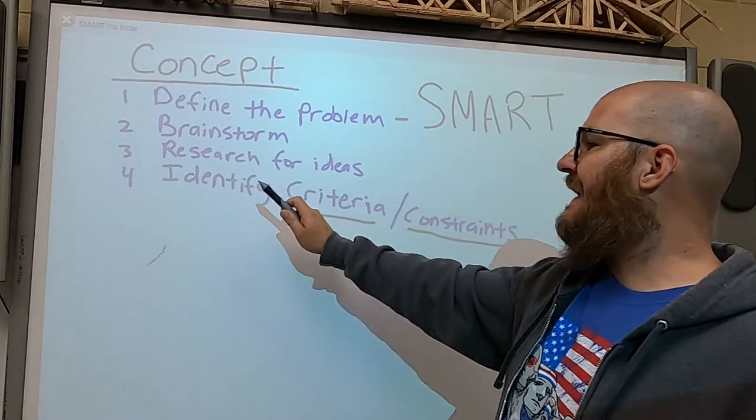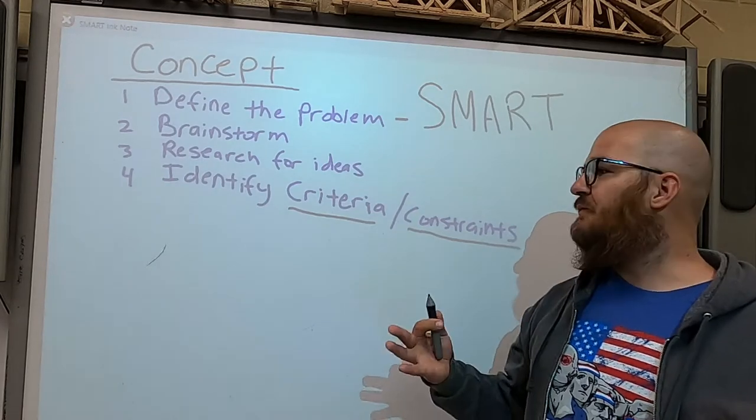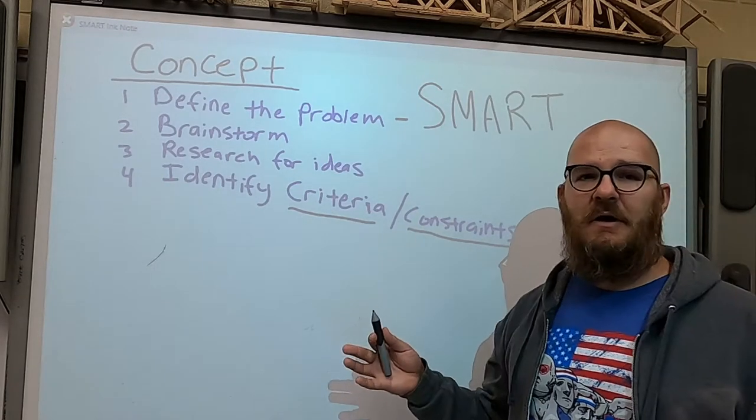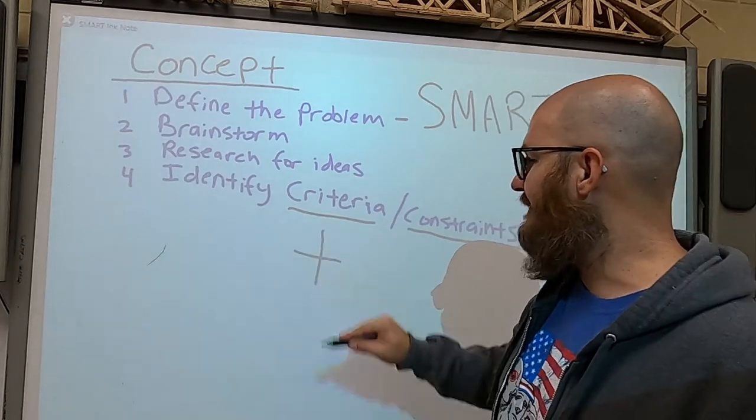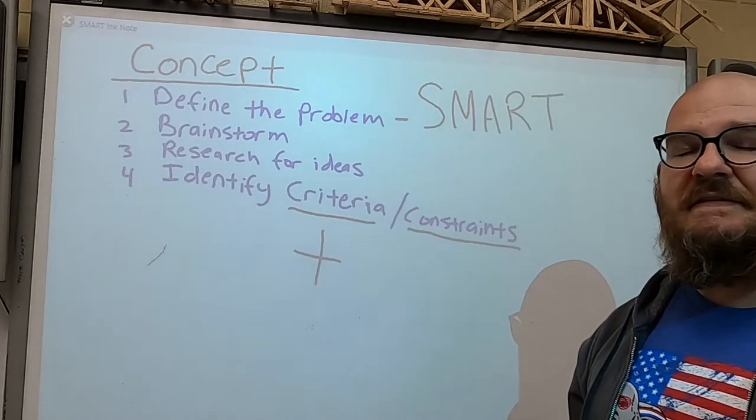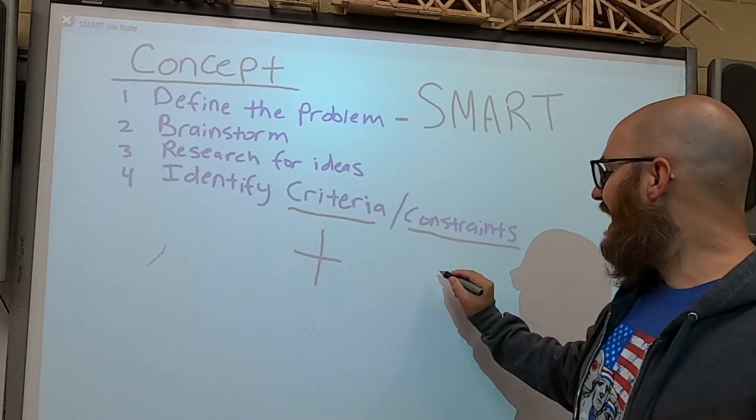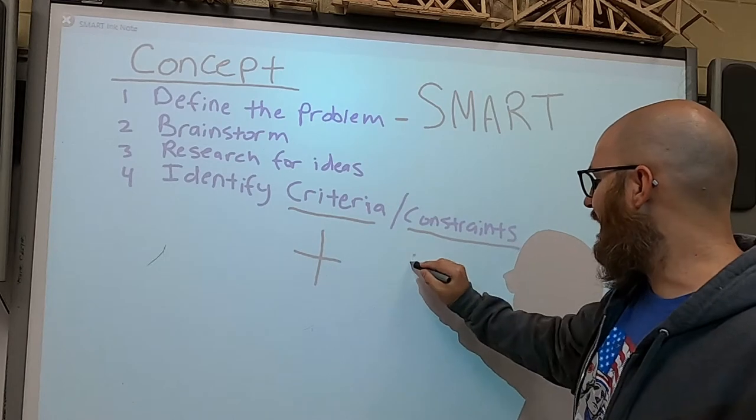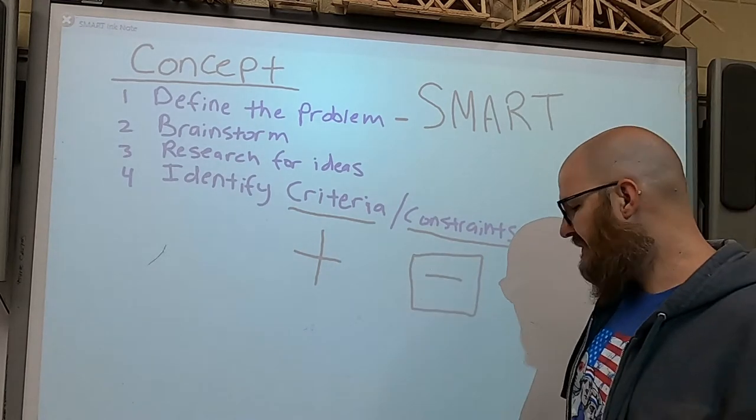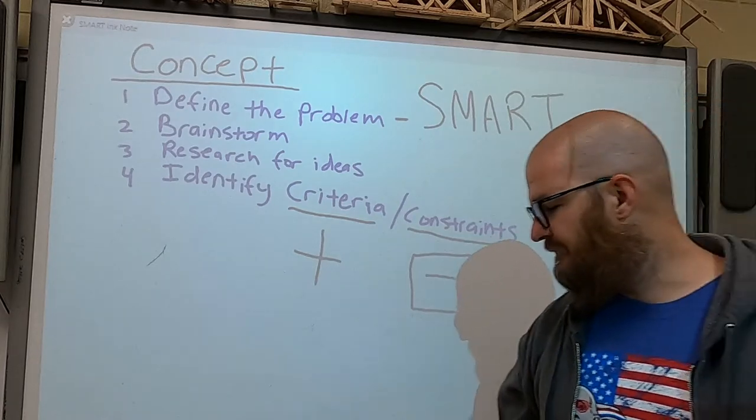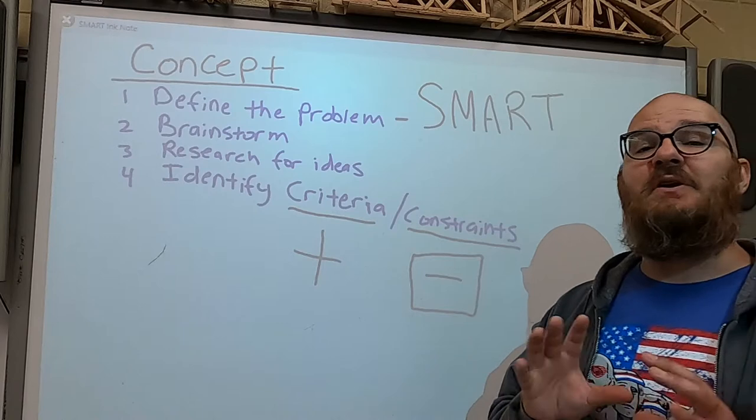Four, identify criteria and constraints. Now that is the purpose of this video. That is what we're going to spend the most time on. A criteria is something that you must have in your design. It's a must-have. A constraint is something that limits your design. It's going to put it inside of a box. Maybe not always, but criteria is something you've got to include in your project.